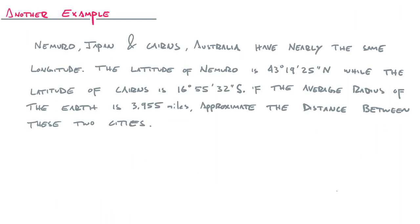All right. But here's a more maybe useful example. Here's a more complete example, maybe. Nemuro, Japan and Cairns, Australia have nearly the same longitude. Their seconds are off by like 10 seconds, but it's pretty close.